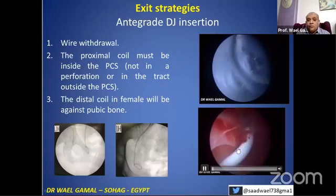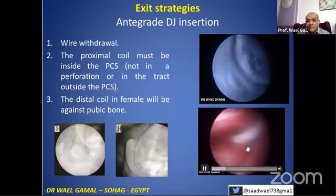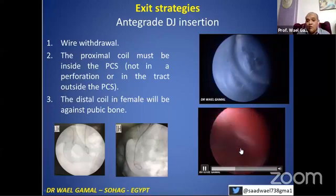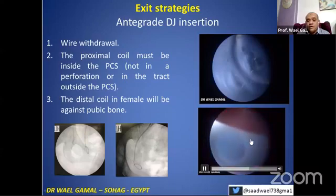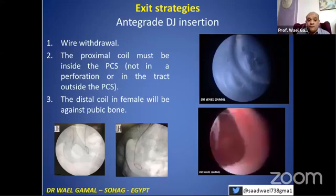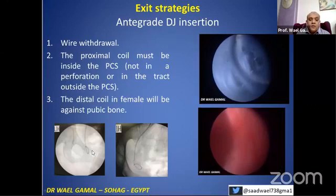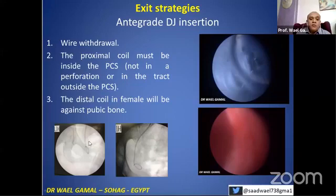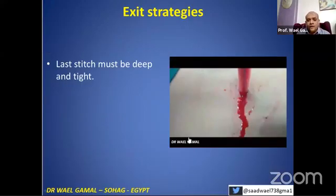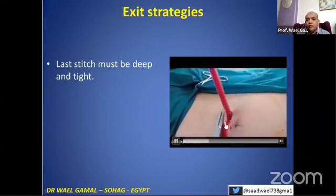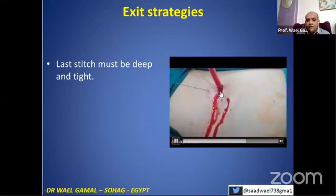Be sure that the proximal coil of the double-J is inside the pelvicalyceal system — the double-J is outside here, this is the kidney capsule from outside. Take it with your forceps and ensure the proximal coil is inside the pelvicalyceal system, not outside. Otherwise there will be leakage and the patient may present with perinephric abscess. Second important point: when you relocate the proximal coil, be sure about the distal coil — it differs between man and woman. In a woman, it will be against the symphysis pubis; in a man, it will be differently positioned. If you don't keep this in mind in females, there will be more withdrawal from above and it will shift into the ureter, requiring relocation again. The last stitch — you have to do it yourself, done very deep to control any bleeding from the skin and subcutaneous tissue.